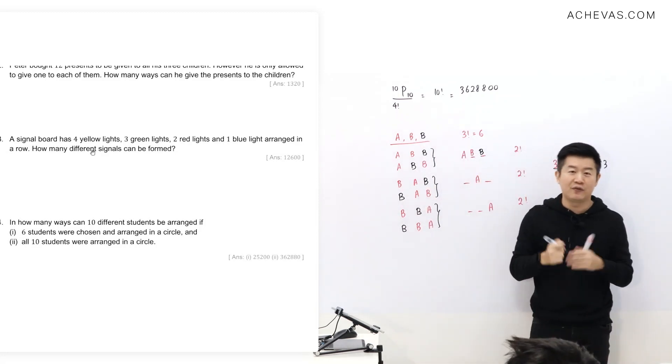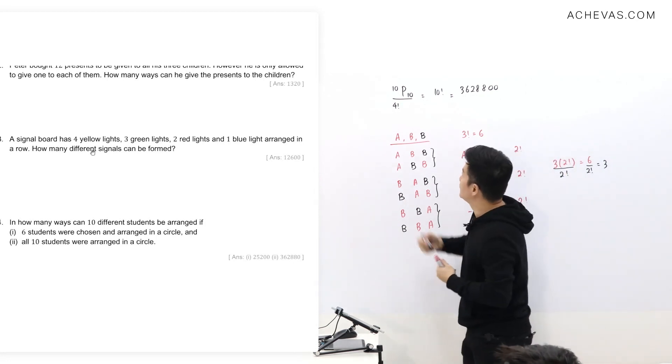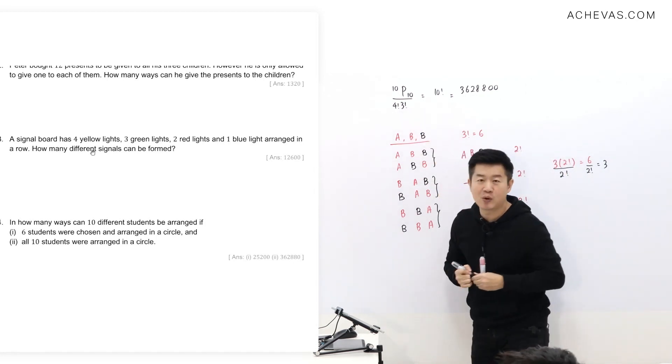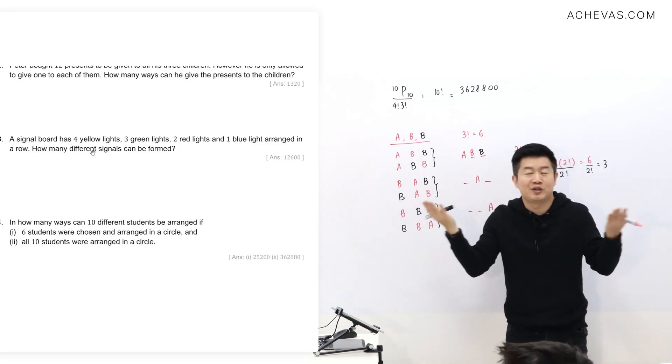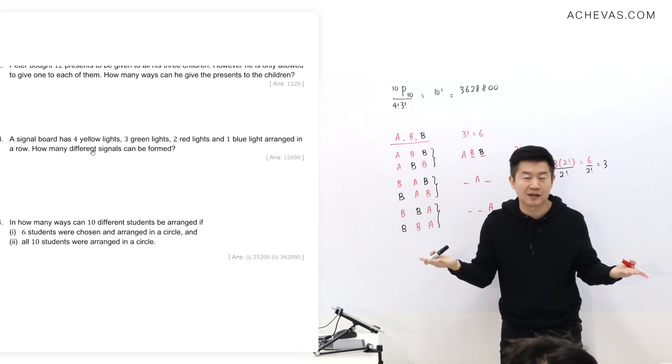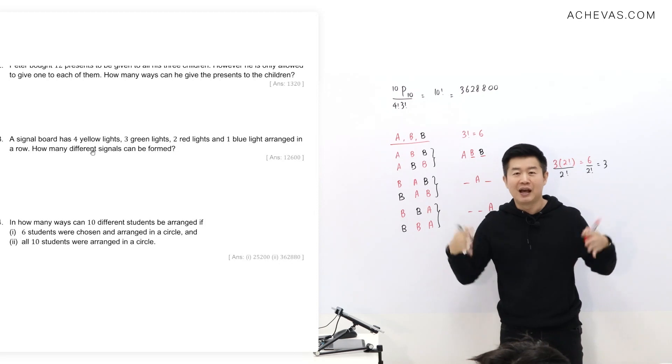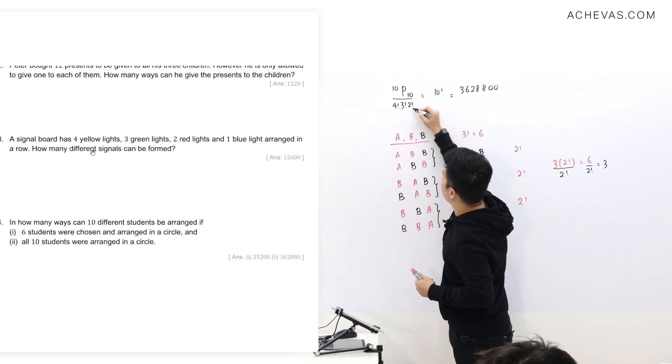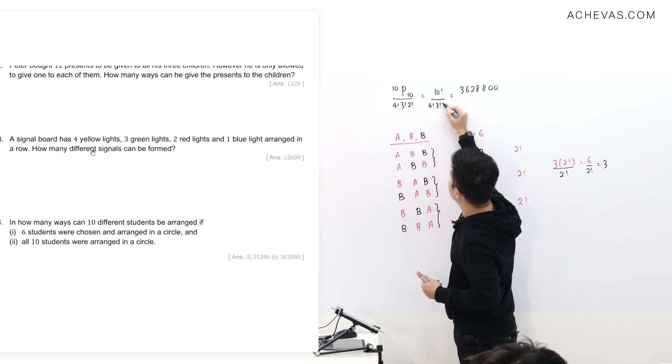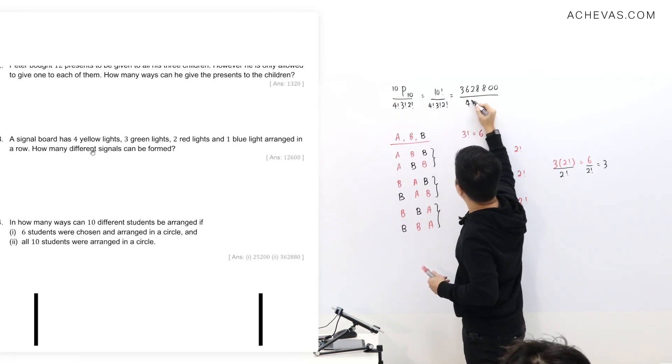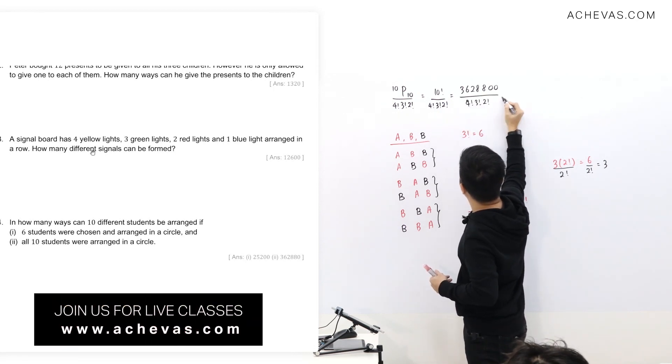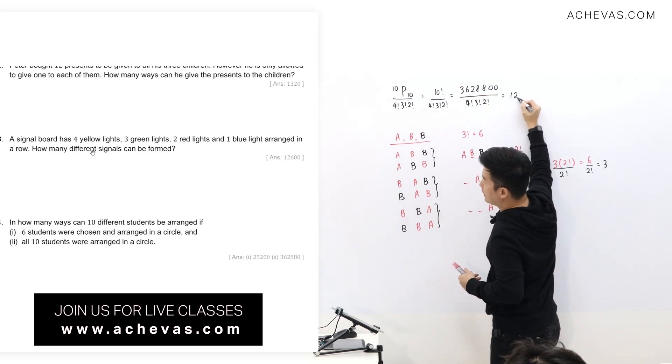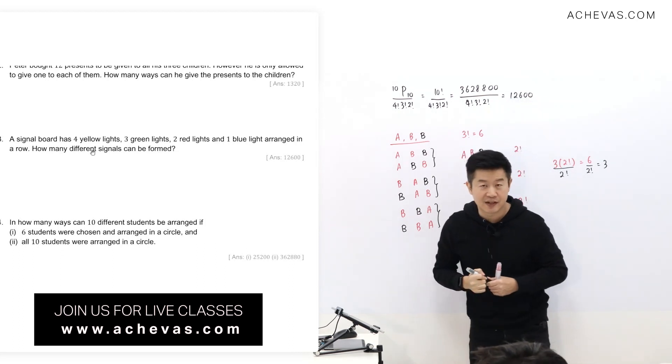I'll divide this by the number of ways the 4 yellow lights can be arranged. There are 3 green lights. So I'll divide this by 3 factorial. I'll divide it by the number of ways that 3 green lights, which are actually totally identical, I don't want to arrange them. I'm removing their arrangement. There are 2 red lights. I'll divide this by 2 factorial. So if I were to take 10 factorial divided by 4 factorial divided by 3 factorial divided by 2 factorial, this will give me my correct answer, 12,600.